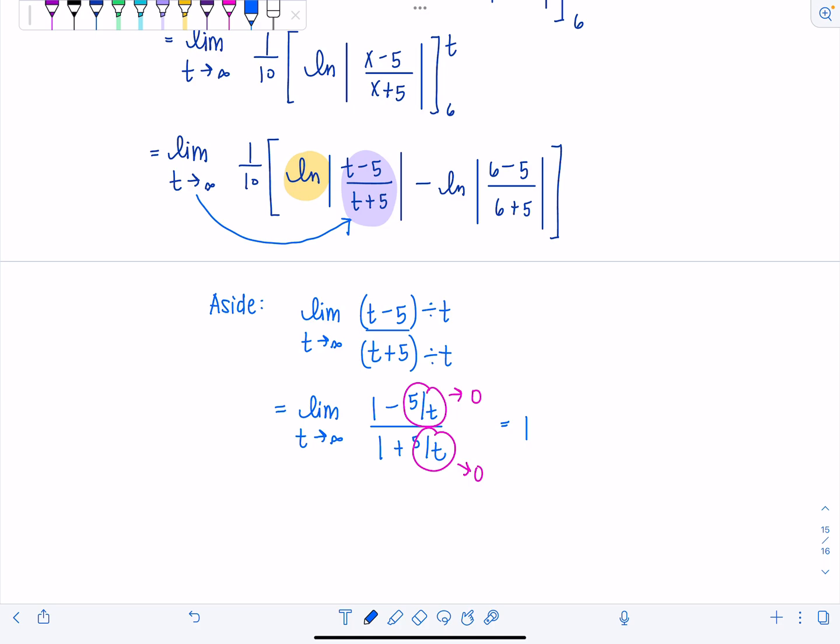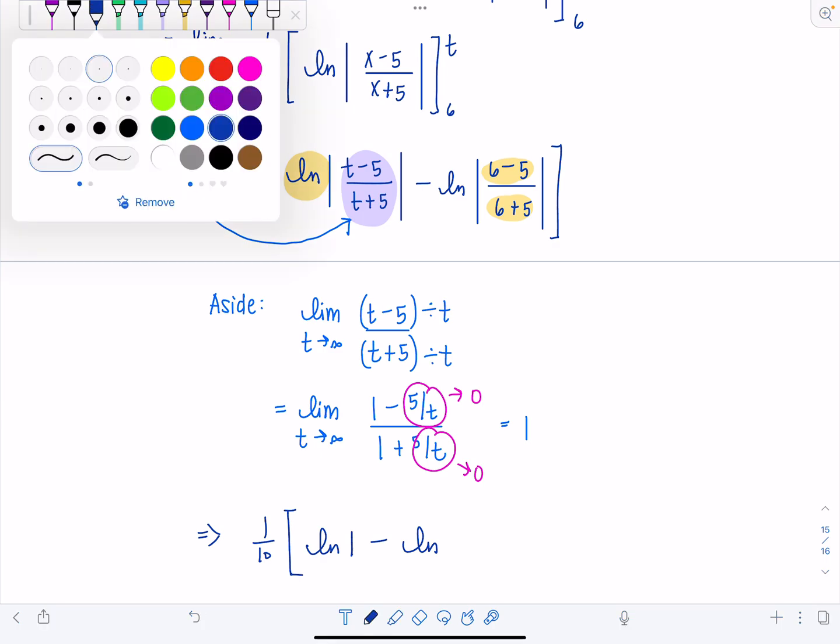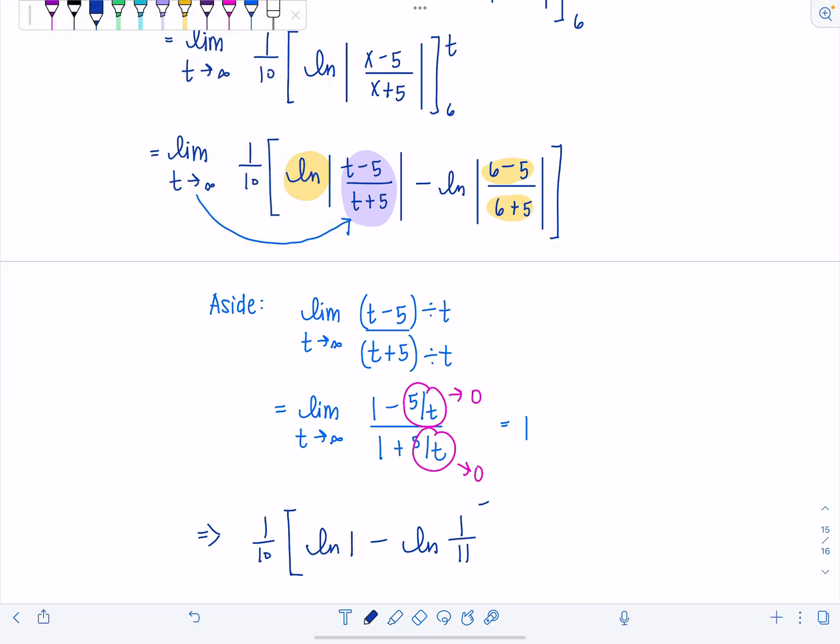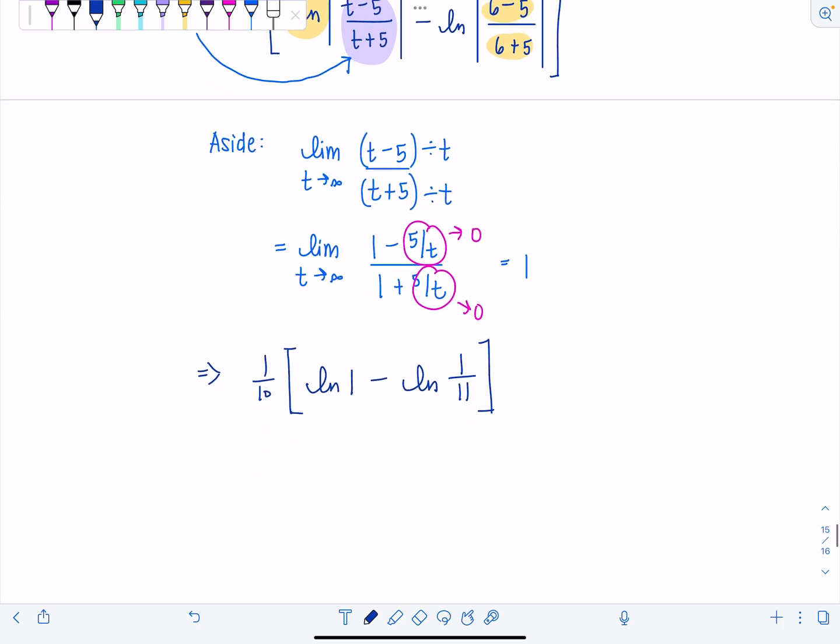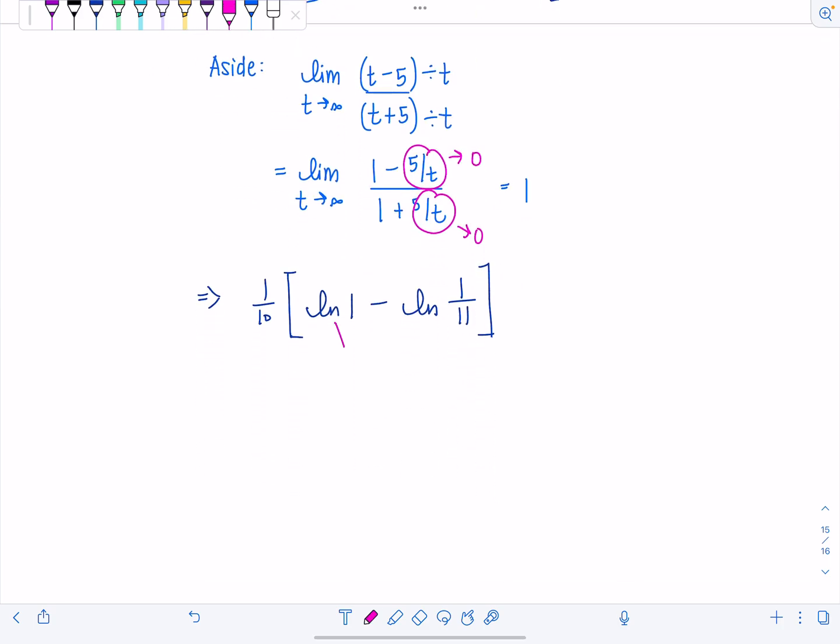Good. So then now, if I return with all that lovely info back to my original limit, then we have 1 tenth times natural log of 1 minus natural log. This is going to be 1 over 11. 1 eleventh. And then we can clean things up. Notice I'm not writing lim anymore because I've already evaluated the limit and there's no more t's in this problem. ln of 1, that's 0. So now I just have 1 tenth times negative natural log 1 over 11. But we know we can move this negative sign, make it the exponent on the argument. So 1 over 11 raised to the negative first is just 11. So we can write our final answer as 1 tenth natural log of 11.